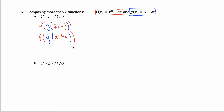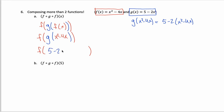Now stare at the blue layer. The innermost function is asking me to take x squared minus 4x and put it into machine g, which is defined up here. Because g of x is 5 minus 2x, g of x squared minus 4x would be 5 minus 2 times x squared minus 4x — copying the rule and changing all the x's into x squared minus 4x. So I can replace the blue layer with 5 minus 2 times x squared minus 4x, while still keeping the outermost f.